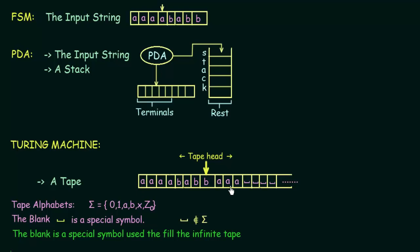Here we have the input symbols, and as mentioned, this is an infinite sequence. The input symbols are filled into these cells and then the remaining cells, instead of leaving them just blank, we fill them with a special kind of symbol known as the blank symbol. The tape alphabets are represented by sigma — sigma is used to represent the input symbols — and the tape alphabets can contain 0, 1, a, b, or any kind of symbols like this. The blank symbol is a special symbol, and something you need to note is that the blank symbol does not belong to sigma.